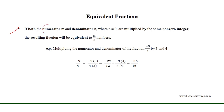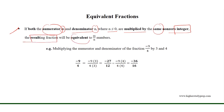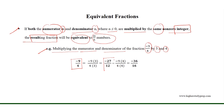If both the numerator m and denominator n, where n is not equal to 0, are multiplied by the same non-zero integer, the resulting fraction will be equivalent to m over n. For example, multiplying the numerator and denominator of the fraction minus 9 over 4 by 3 and 4, we get that minus 9 over 4 equals minus 27 over 12 equals minus 36 over 16.